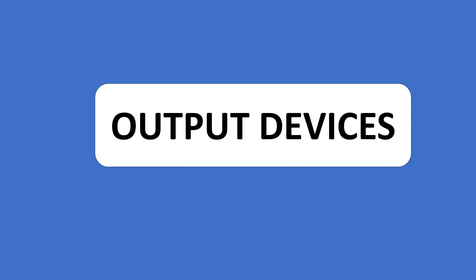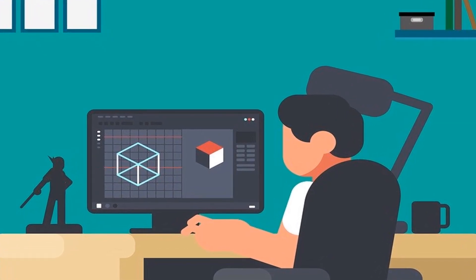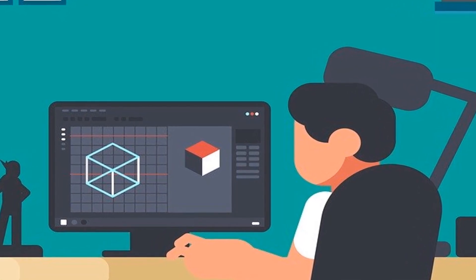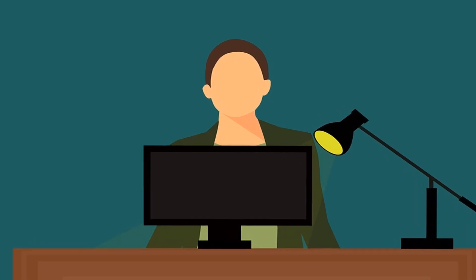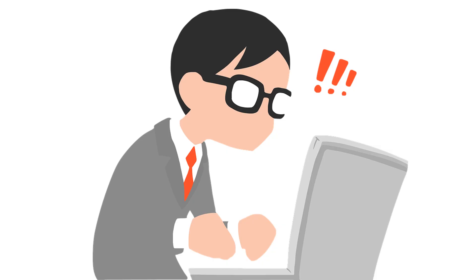Output Device. An output device receives data or information from the central processing unit. Using the output devices, a computer can interact with the human. Monitor. A monitor is an output device that displays data from a computer onto a screen, so the user can interact with the data.